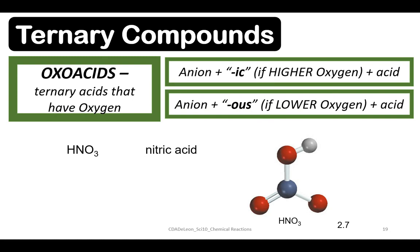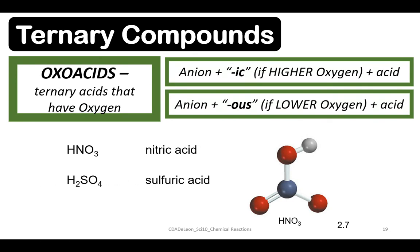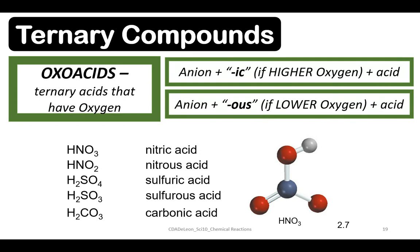Higher oxygen content uses the suffix 'ic' and lower oxygen content uses the suffix 'ous'. Examples include nitric acid, sulfuric acid, nitrous acid, sulfurous acid, and carbonic acid.